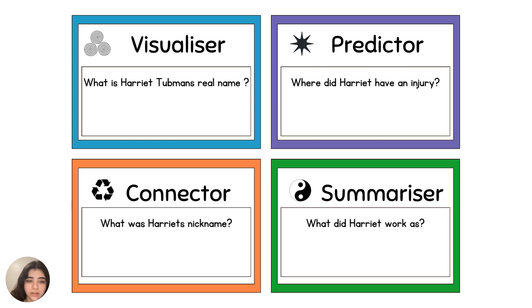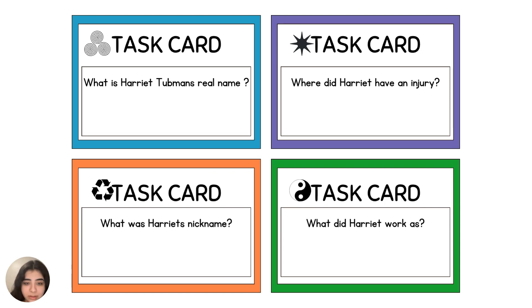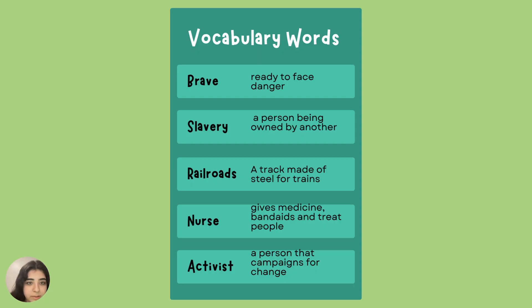We have a few task cards. Questions include: What is Harriet Tubman's real name? Where did Harriet have an injury? What was Harriet's nickname? What did Harriet work as? We have a few more task cards with additional comprehension questions.